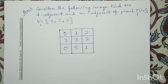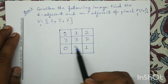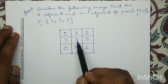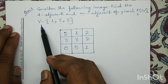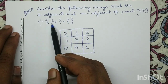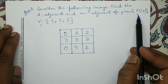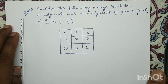Good morning. Let us solve a numerical question on adjacency property in a digital image. The V set consists of three gray levels: 1, 2, and 3. For pixel P having the coordinate (1,1), we have to identify its four-adjacent and M-adjacent pixels.